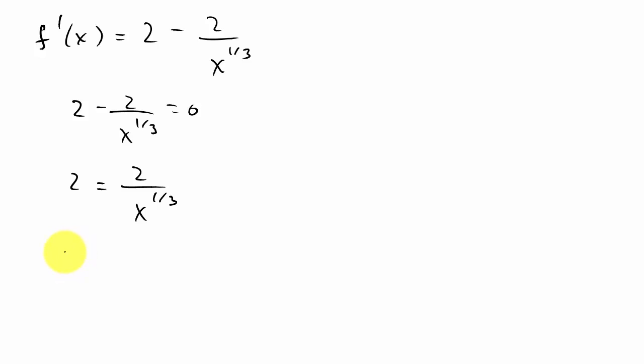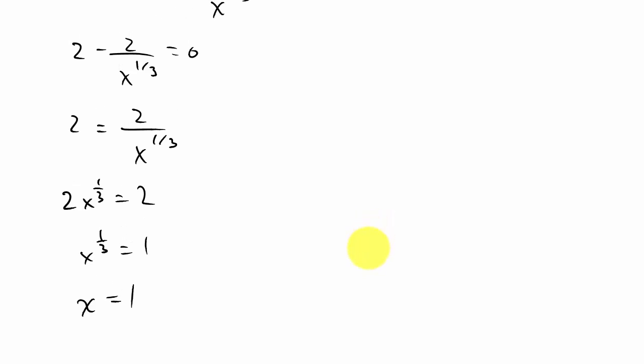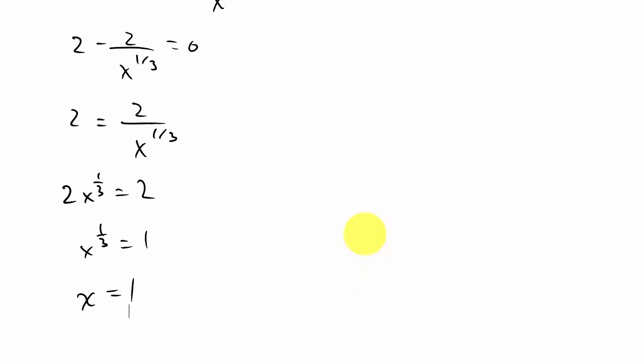Move this up: 2x to the 1/3 equals 2, so x to the 1/3 equals 1, and then if I cube both sides I get x equals 1. So there's a critical number x equals 1. Let me erase all the work here on solving it so we can move the 1 back up.